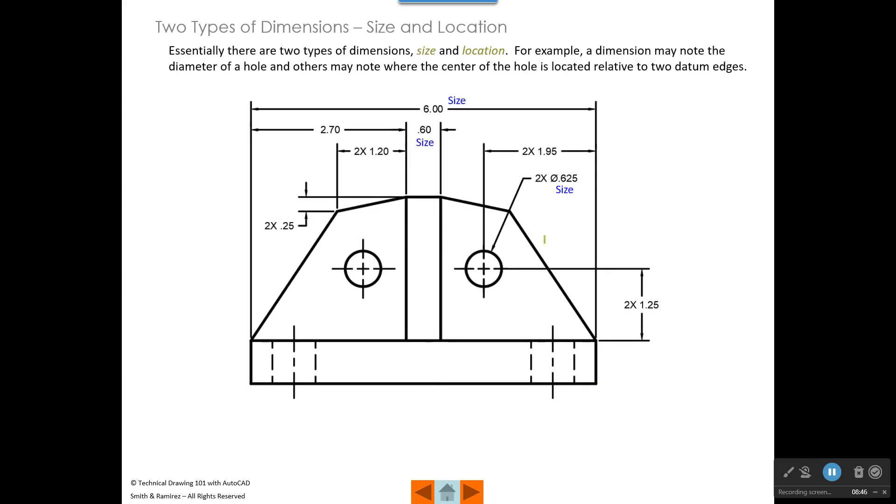Essentially, there are two types of dimensions, size and location. So that's what you should be looking for. So the diameter of this hole right here, 0.625, that's the size of that hole. This dimension here, which tells us how far over that center, the center for that hole is located, is a location dimension. And this dimension here, which tells us how far up from this surface that the center of that hole is located, that's a location. So these are location dimensions that I've marked here, where the overall width of the part that we have right here, which is 6.00, which is right up here, that would represent a size dimension.